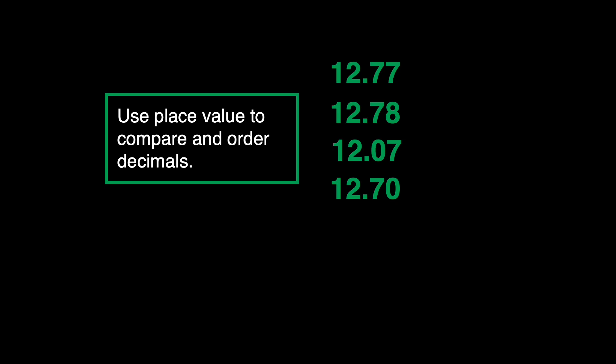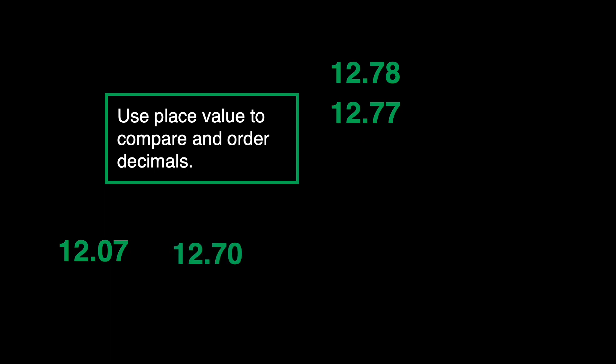It means this runner reached the finish line the fastest. The runner with a recorded time of 12 and 7 hundredths will be first among the four. Now let's observe the hundredths place. We have 8 in the first decimal, 7 in the second decimal, and 0 in the third decimal. Which of these three will be next after 12 and 7 hundredths? It's going to be 12 and 70 hundredths, because 0 is the least among the three, compared to 8 and 7 in the hundredths place.